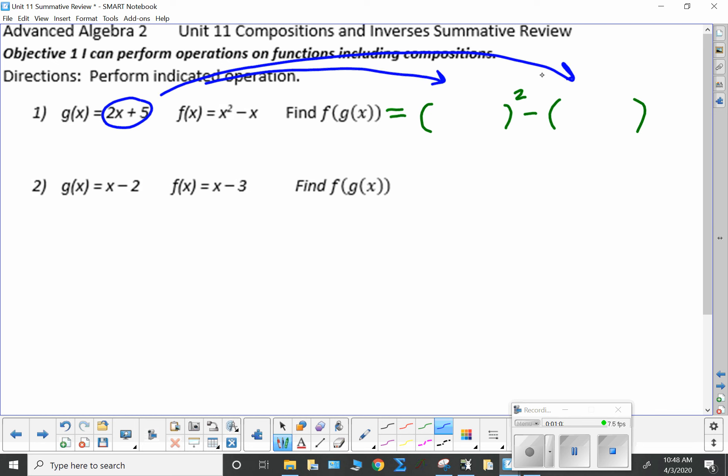So we're going to get 2x plus 5 in here, and 2x plus 5 out here. Now, you're simply going to expand and then combine like terms. Remember that this you have to FOIL. This is 2x plus 5 times 2x plus 5. And then I have to distribute this guy. So I get minus 2x minus 5.